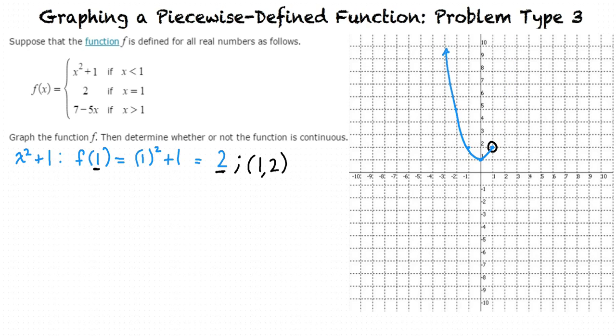Now, the next part of the function is a solid point at 1 comma 2, so this will fill in the open circle at the endpoint of the parabola. Now why is this? Because looking at the second part, we see that y equals 2 if x equals 1. This means one solid point.